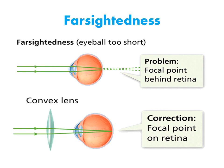Farsightedness: a farsighted person can see distant objects clearly, but nearby objects appear blurry. The eyeball is too short, so the image that falls on the retina is out of focus. A convex lens corrects this by bending light rays toward each other before they enter the eye, so an image then focuses on the retina. These are the ways we use to correct both vision problems — nearsightedness and farsightedness.